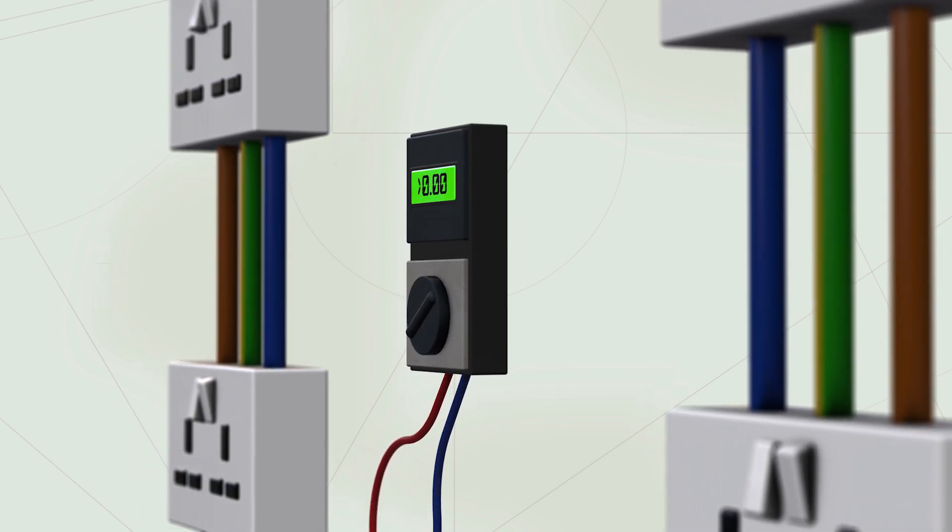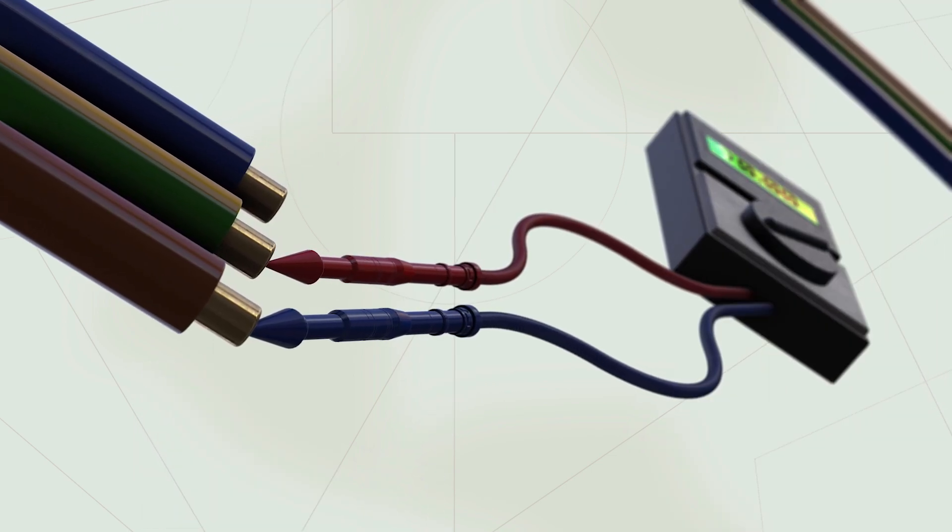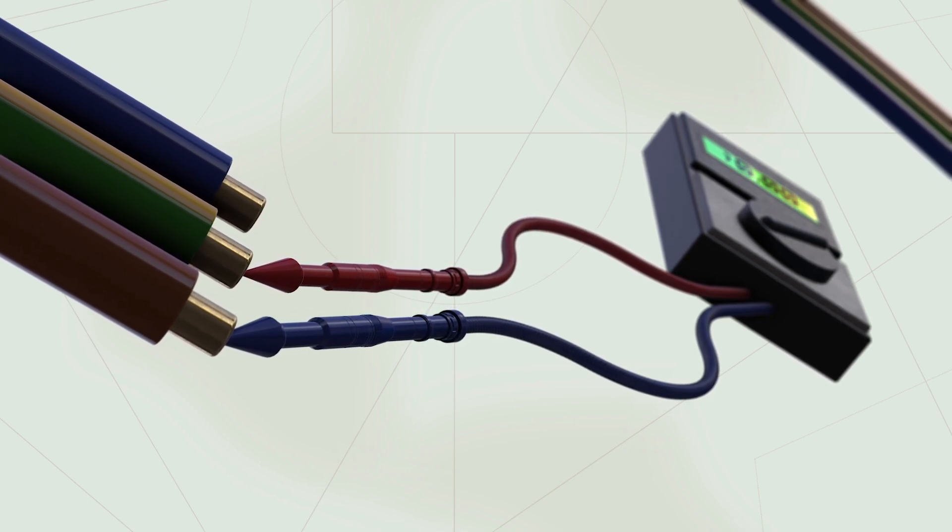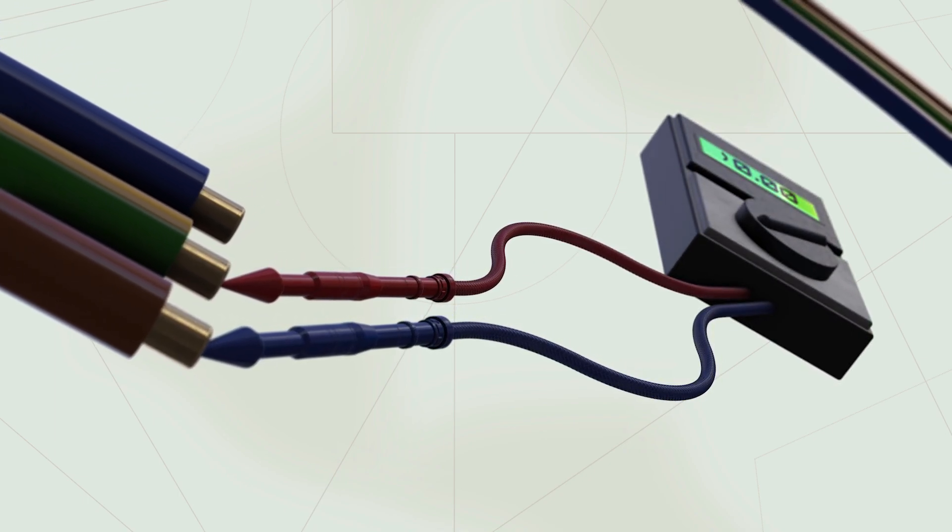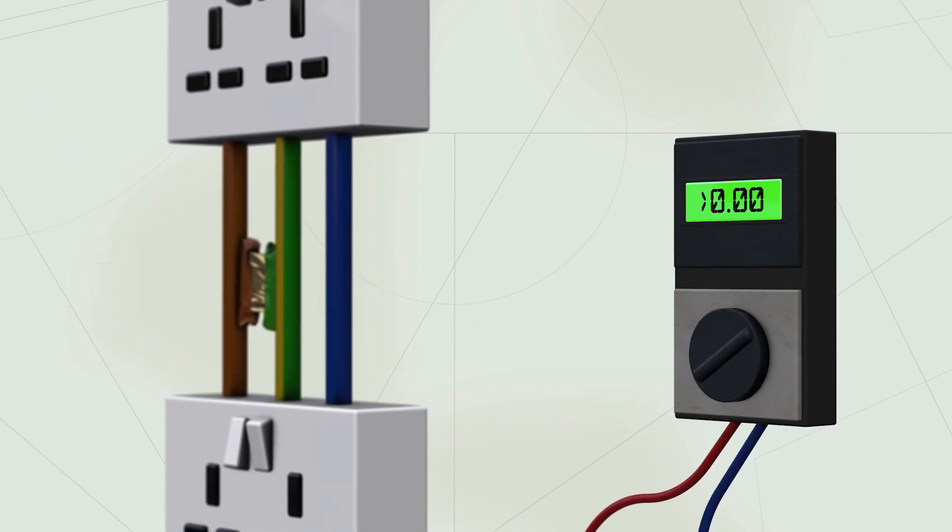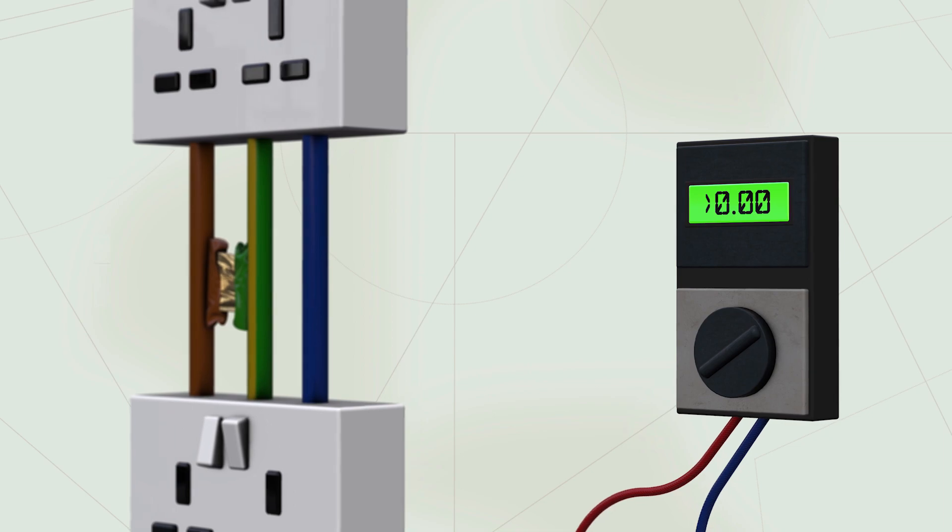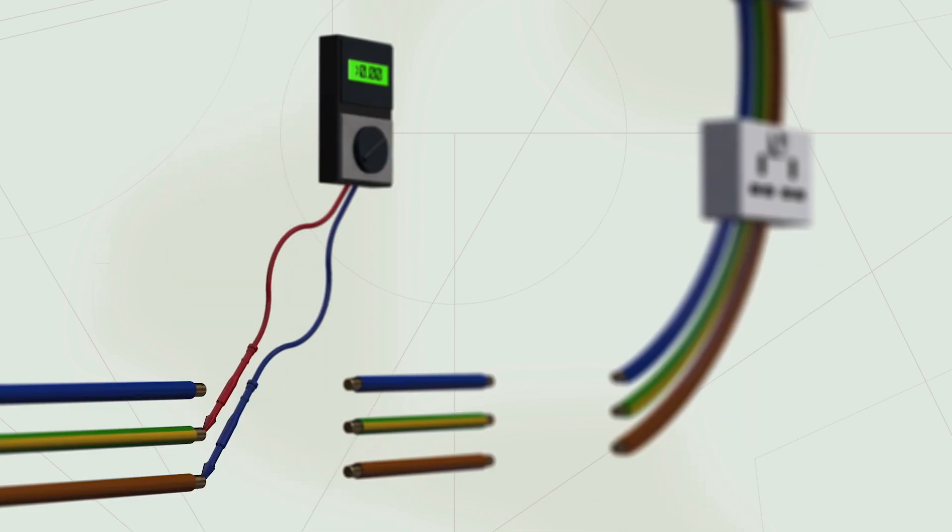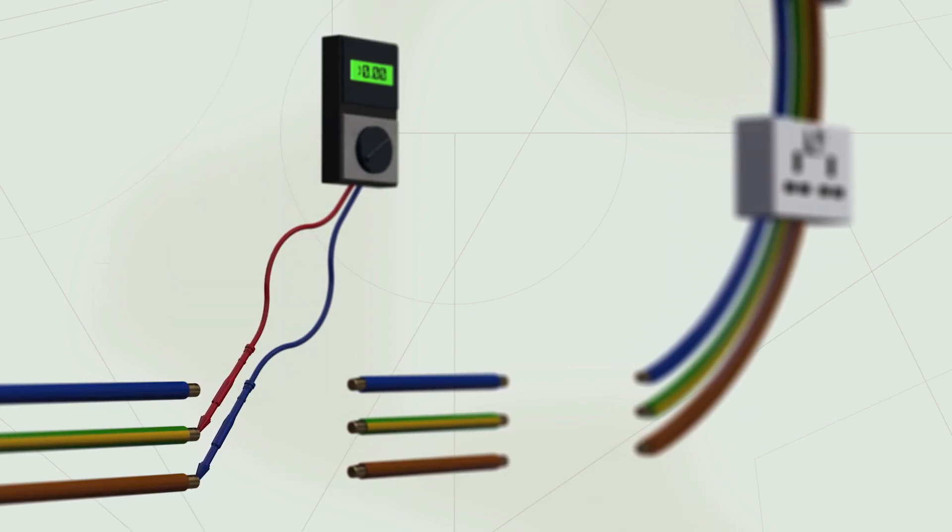In this example, there is a fault between the line and the CPC conductors. When a continuity test is carried out, it will indicate a low resistance between these two conductors, indicating a short circuit between line and CPC. You can continue splitting the circuit into smaller sections, retesting each part until you've located exactly where the fault is.